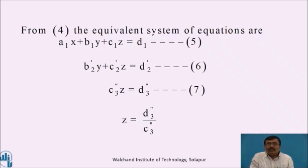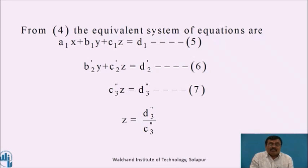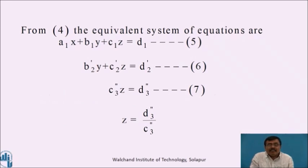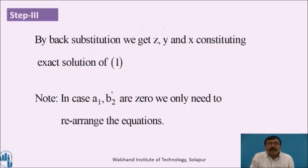From equation 7, z equals d3'' divided by c3'' by cross multiplication. In step 3, by back substitution, we get the value of z, and substituting the value of z obtained from equation 7 into equation 6, we get the value of y. Then substituting both y and z into equation 5, we get the exact solution. Note: in case a1 or b2' are zero, we only need to rearrange the equations.